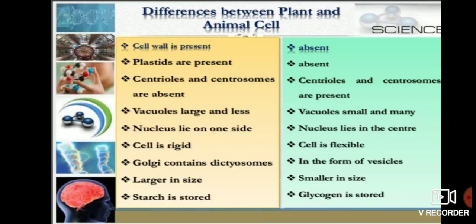In plant cells, vacuoles are larger but fewer in number, while in animal cells, vacuoles are smaller but greater in number as compared to plant cells.